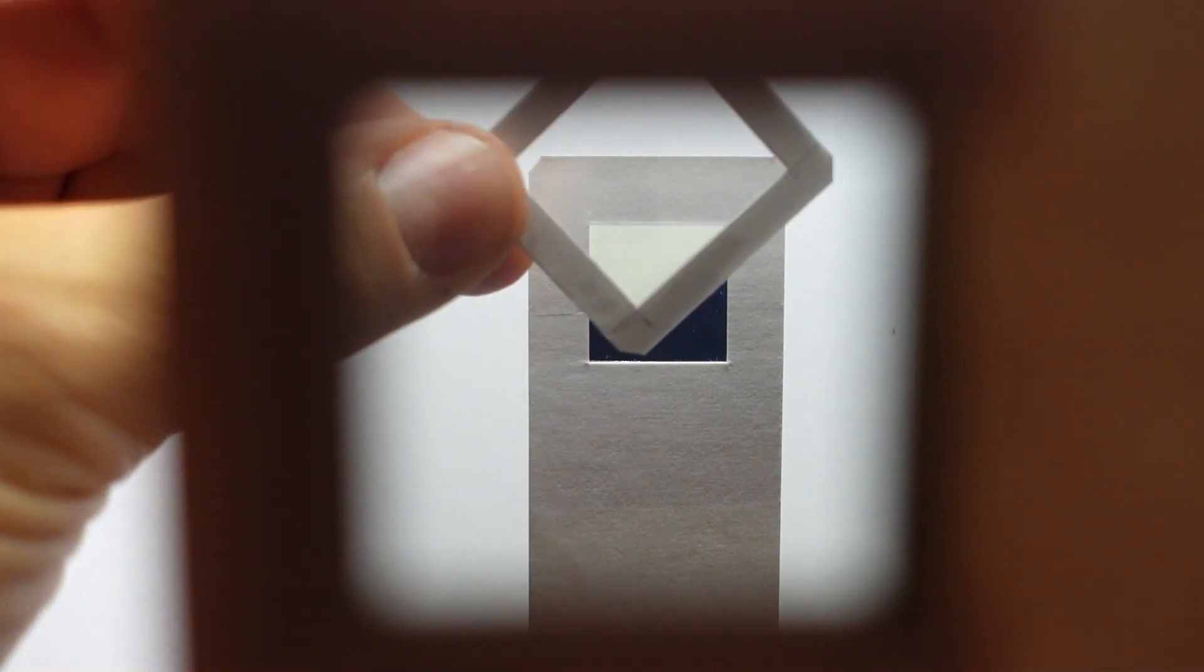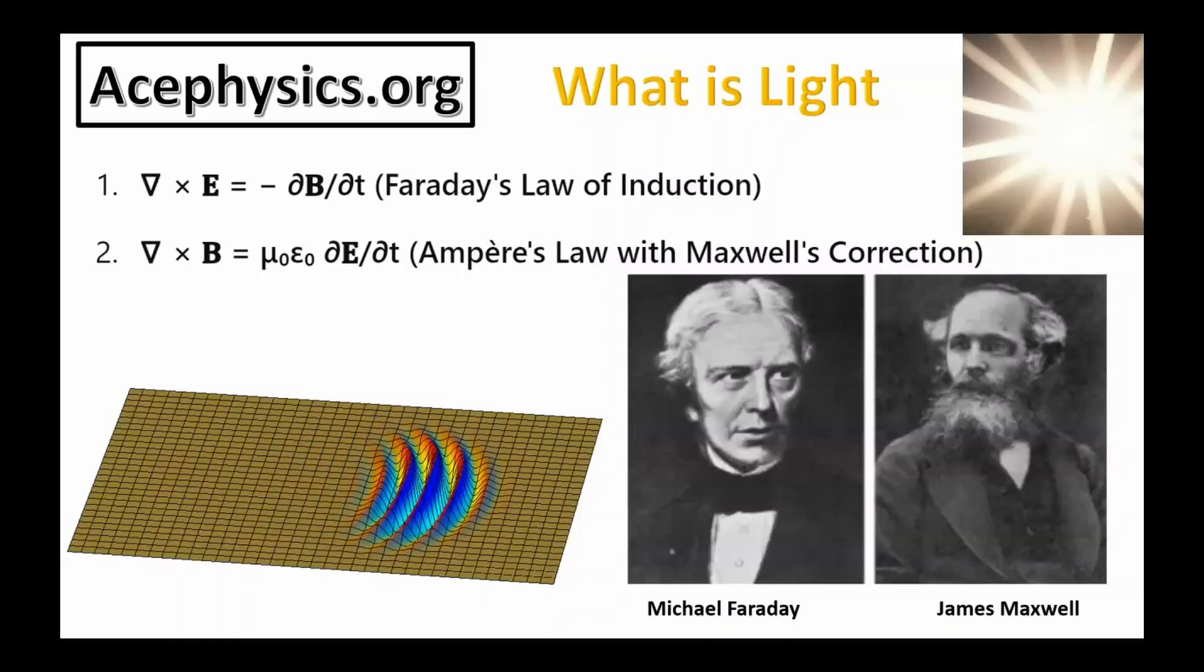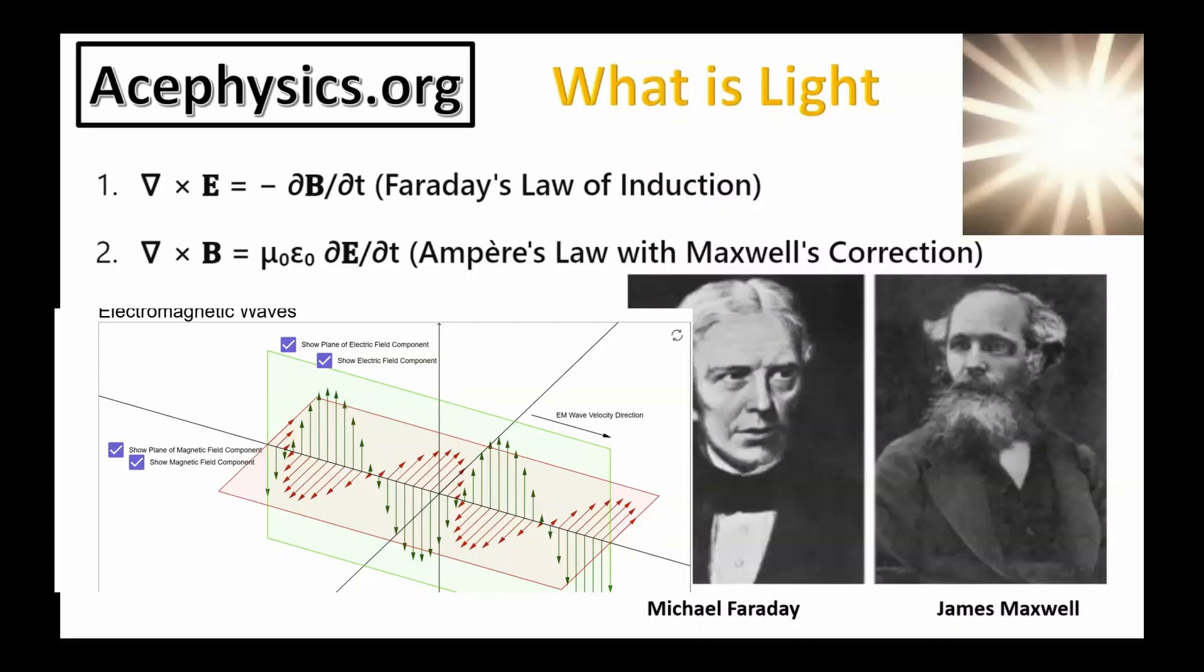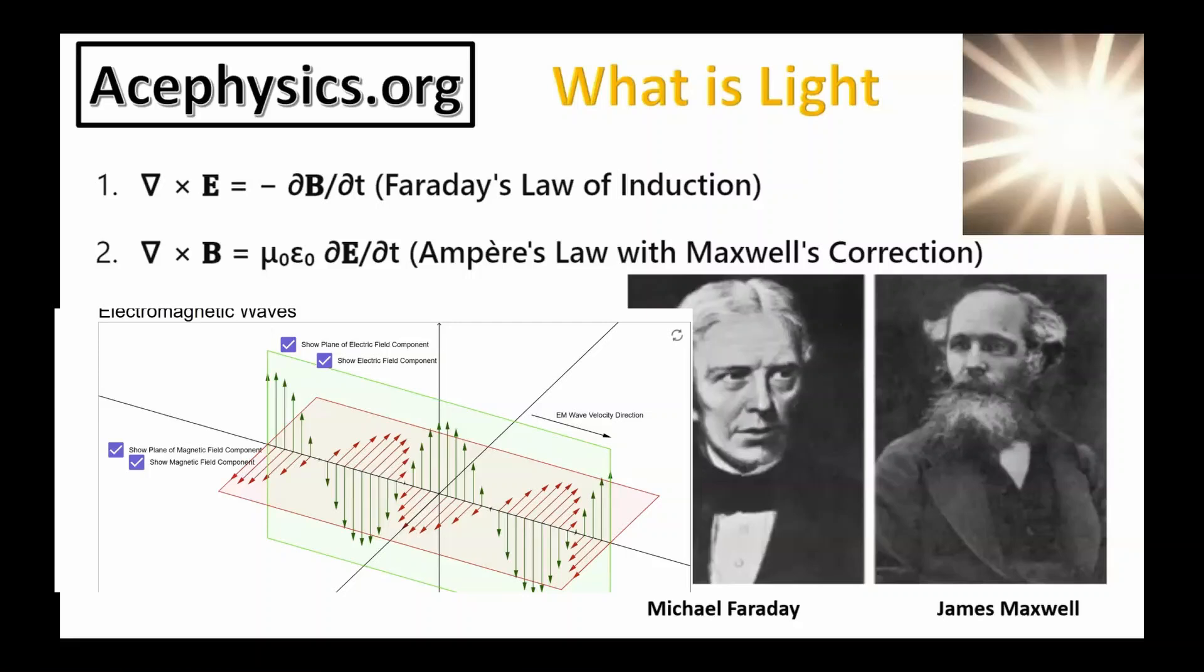Light is an electromagnetic wave made of perpendicular electric and magnetic fields that oscillate as the wave travels. Maxwell's equations explain that these fields generate each other, allowing light to move through space without a medium.